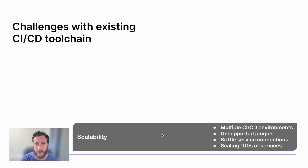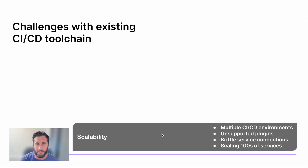Some CICD options come with plugins that become outdated over time or difficult to maintain. Or if you're migrating from a monolithic app to microservices, building out scale pipeline architectures can be really difficult.